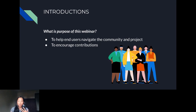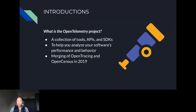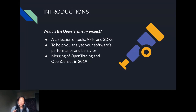If you're watching this today, you likely already know what OpenTelemetry is, so I'll just do a brief refresher. OpenTelemetry is a collection of tools, APIs, and SDKs that you can use to instrument, generate, collect, and export telemetry data — metrics, logs, and traces — to help you analyze your software's performance and behavior. It was first developed in 2019 with the merging of two competing open source instrumentation projects: OpenTracing and OpenCensus. It is now the second most active CNCF project after Kubernetes.